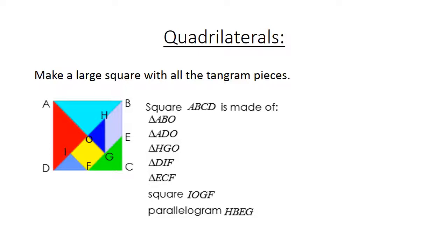Then we have square IOGF, which is the yellow one. And the parallelogram HBEG, my purple one.